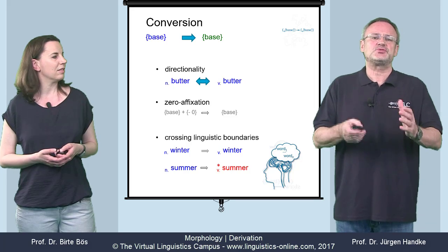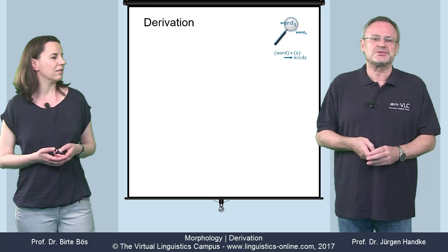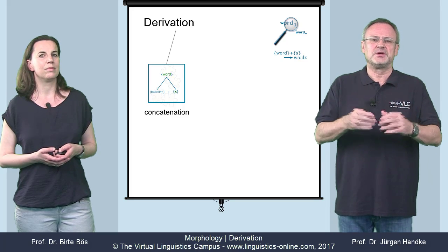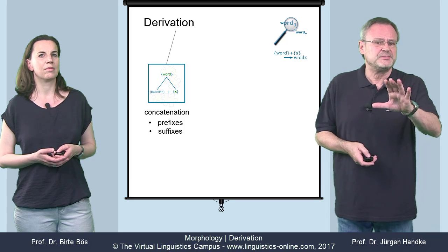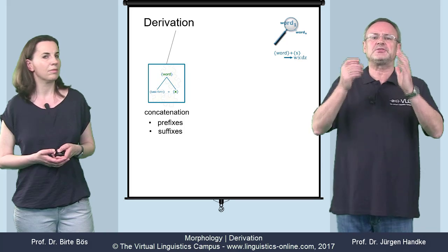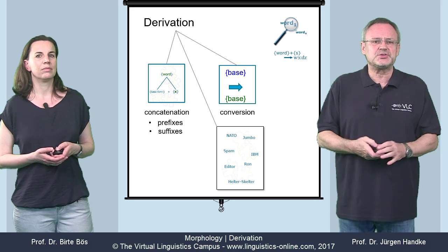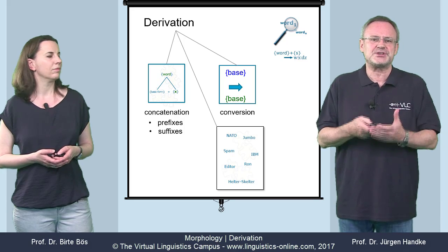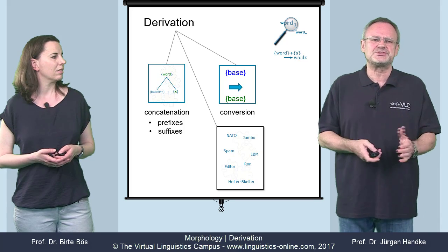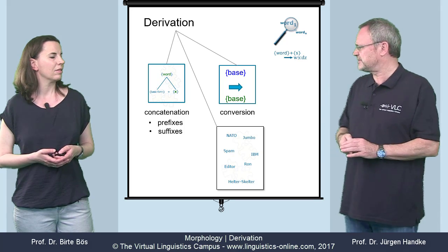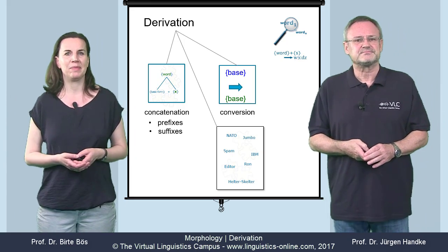Okay, let's summarize. We have two central operations in present-day English that allow us to derive new words: concatenation, mainly via prefixes and suffixes — as we saw, infixes are confined to expressive language — and conversion. Other operations that expand the English vocabulary by recycling existing words, such as blends like brunch, have not been considered in this e-lecture. Please consult the microlectures on morphology for further detail. See you again soon. Bye-bye.